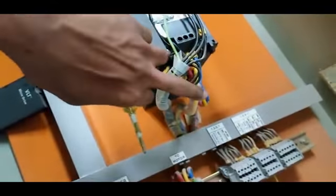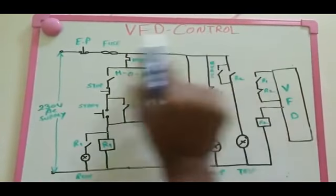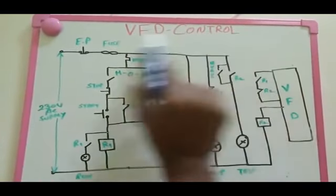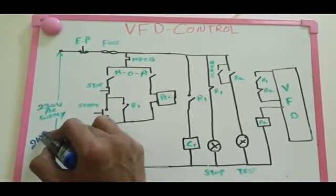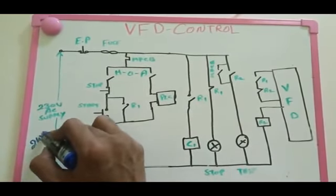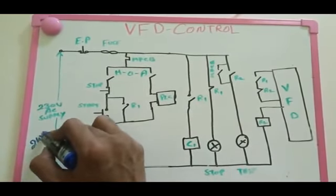This is the whole system we need for simple VFD driving purposes. After that we are going to see the control diagram - this is a very simple VFD control diagram. VFD means Variable Frequency Drive. This is the important section for control. First of all we need to mention the auxiliary supply - that means maybe 230 volt DC or 24 volt DC. Based on your VFD configuration you can select the auxiliary supply. Here I selected 230 voltage.